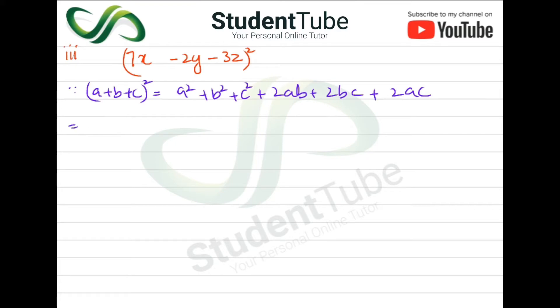So here, a square will come, 7x square. Then plus, there is minus 2y, so its square. Then plus, there is minus 3z square. Then plus 2 times a, which is 7x, times b, which is minus 2y. Then plus 2 times b, minus 2y, times c, minus 3z. Then plus 2 times a, 7x, times c, minus 3z.